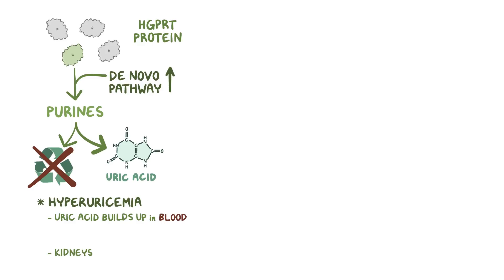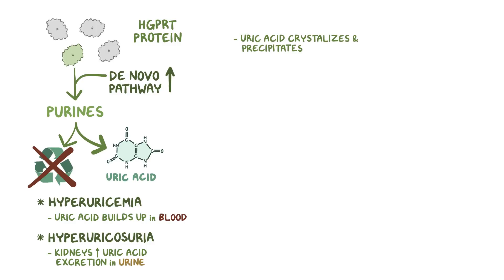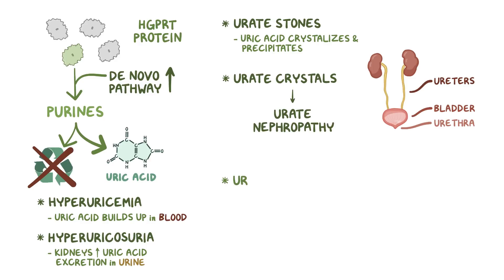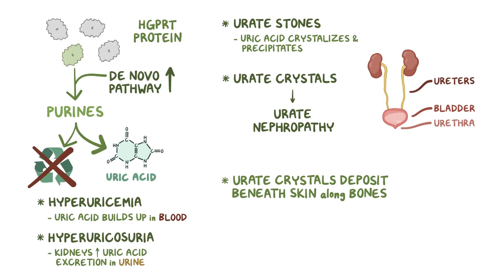At first, the kidneys try to compensate by increasing uric acid excretion into the urine — this is called hyperuricosuria. As the disease progresses, uric acid precipitates and crystallizes, forming urate stones that can get lodged in the urinary tract, obstructing the flow in the ureters, bladder, or urethra. Though the kidneys can't keep up, the excess uric acid begins getting stored up in tissues in the form of urate crystals. For unknown reasons, elevated levels of uric acid seem to cause a drop in the levels and activity of dopamine, a neurotransmitter in the brain, and that can affect a person's emotions and behavior.